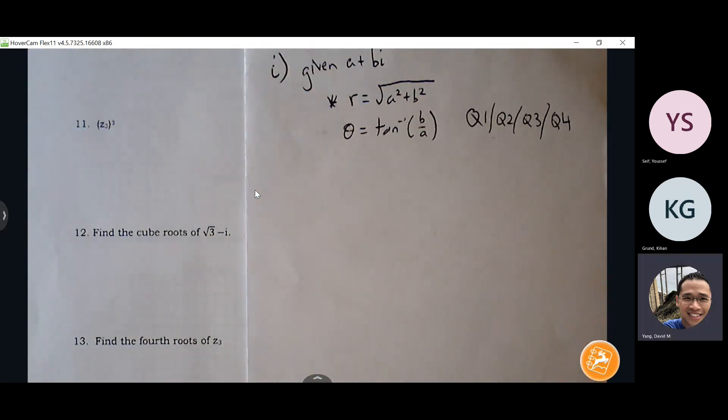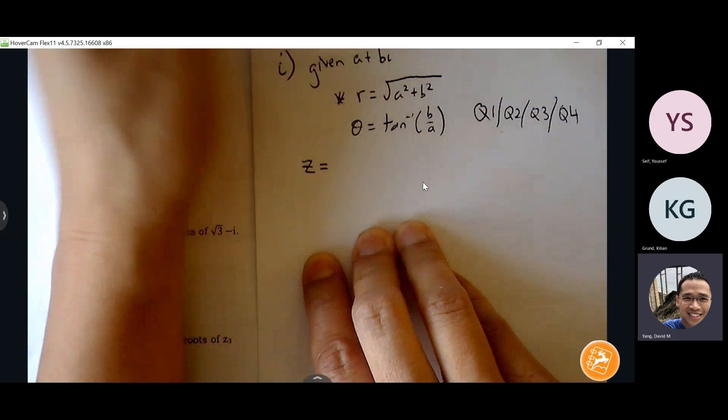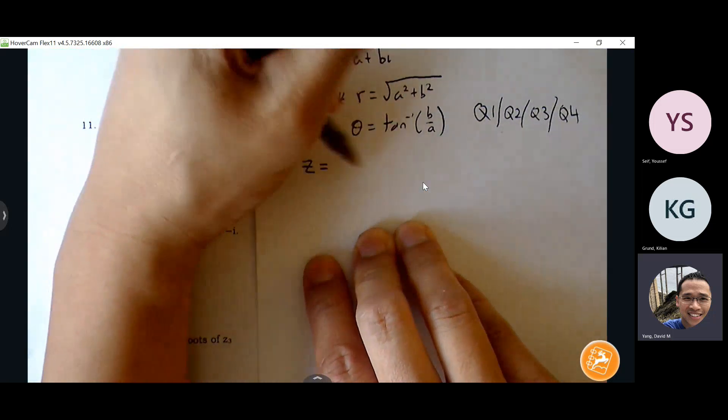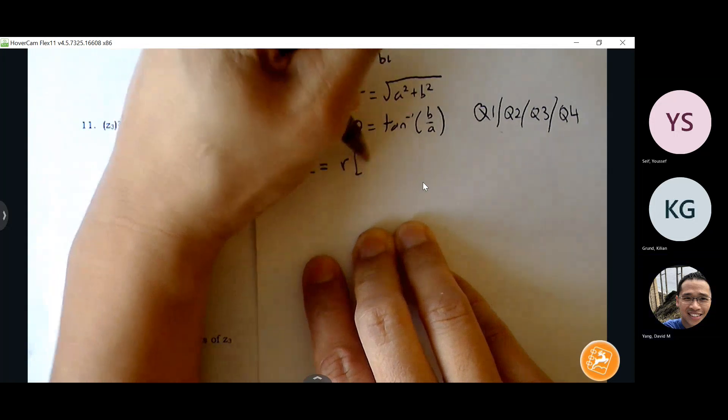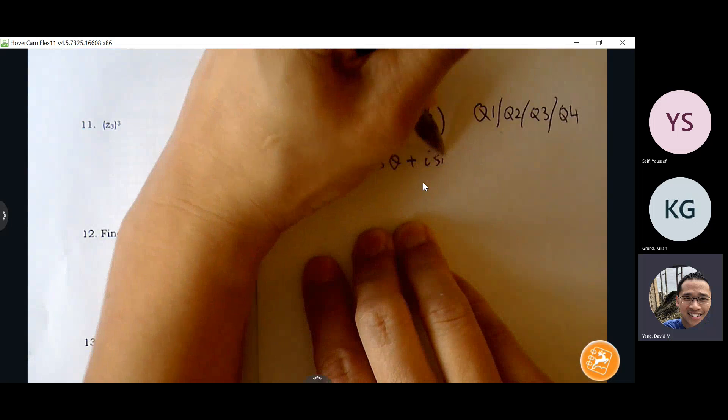So if you're given A plus bi, first thing you want to do is get your R and get your theta. And then make sure you're living in the appropriate quadrants. Okay, now after you get your R and theta, you can build your complex polar number, polar form, which is R cis theta, or I can do it as R cosine theta plus i sine theta.